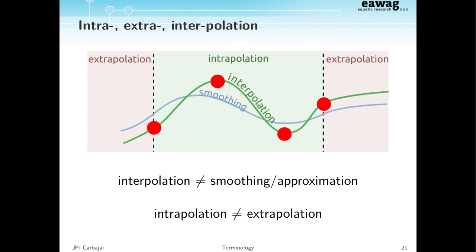We're going to talk about building models for these systems and how we're going to use this information. To make sure we're all on the same page, I'm going to set some language. When we say we're going to interpolate some data, we're saying the function goes through the data points — not that we're guessing points in between. That's what interpolation means: the function goes through the points.